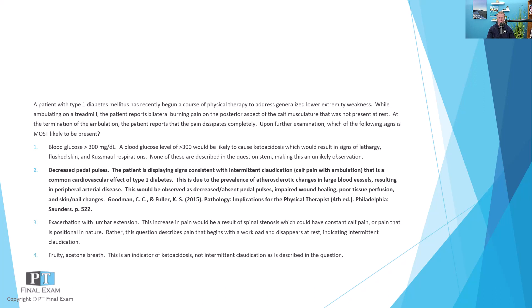This is related to peripheral arterial disease, which is extremely common in type 1 diabetes. The mechanism is that type 1 diabetes impairs sugar processing because of insufficient insulin production from the pancreas. This results in fatty breakdowns that create ketone bodies, and all that fatty breakdown starts to create atherosclerosis or atherosclerotic changes in the large blood vessels. A person with type 1 diabetes has a much higher risk of coronary artery disease as well as peripheral arterial disease. Other observable signs include decreased or absent pedal pulses, impaired wound healing, and poor tissue perfusion and skin or nail changes.